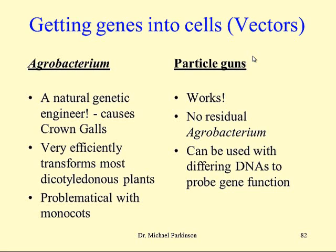For example, rice has been transformed with agrobacterium. Biolistics using particle guns is also used extensively, and one advantage is that there's no residual agrobacterium that you have to get rid of. It can also be used with different DNAs to probe gene function — it's possible to blast in messenger RNAs or cDNAs from a wide variety of genes and examine their functions in various tissues. This can all be done with transient expression, so you don't need stable expression just to probe gene function, and it can be done quickly and easily in a matter of days.